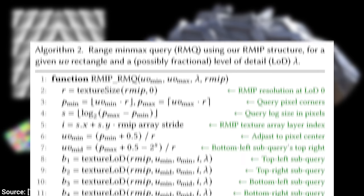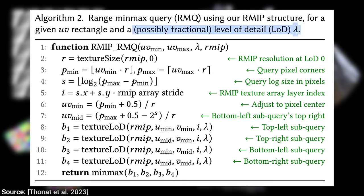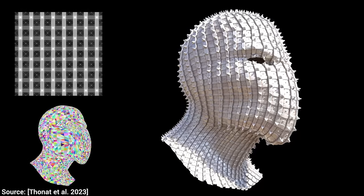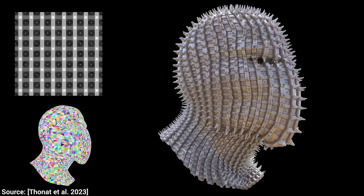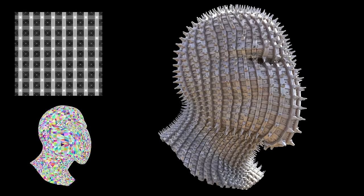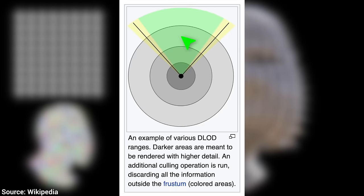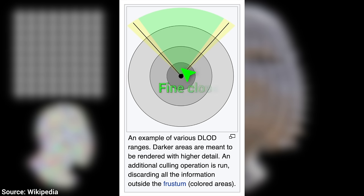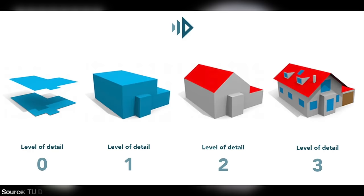Two — it takes a possibly fractional level of detail parameter. That is very cool. Level of detail helps you save resources by rendering a coarse version of a piece of geometry and adding details only as we get closer — this is when we would see them after all.